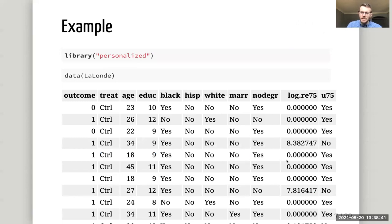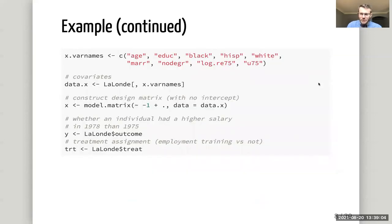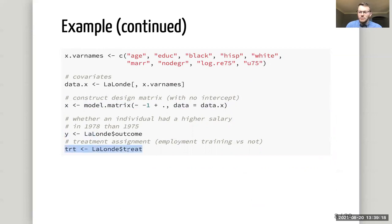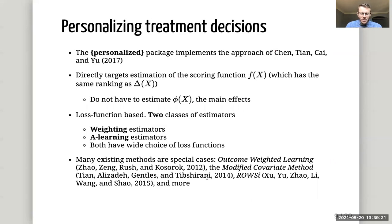The personalized package is really aimed at estimating these scoring functions. Here's an example dataset where the outcome is a yes-or-no outcome indicating that someone's income improved from one year to the next. The treatment is participation in a job training program, and there are several covariates available. To set up the data for the personalized package, we indicate the names of all covariates which potentially modify the treatment effect, then construct a design matrix, pull out the outcome, and pull out the treatment assignment vector.